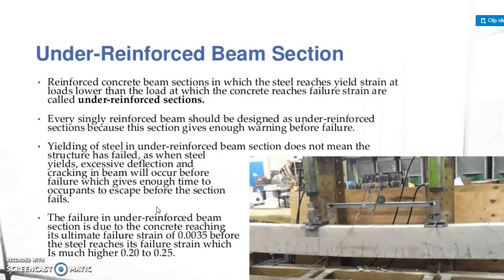Then we discuss the under-reinforced section. A reinforced concrete beam section in which the steel reaches its limiting stress at a load lower than the load at which the concrete reaches its failure strength is called an under-reinforced section. Every singly reinforced beam should be designed as an under-reinforced section because this section gives enough warning before failure.